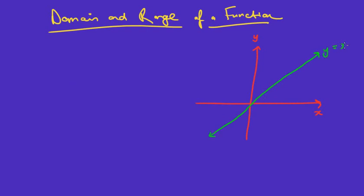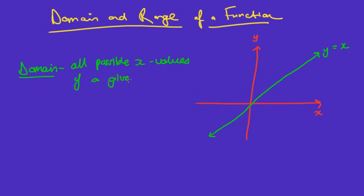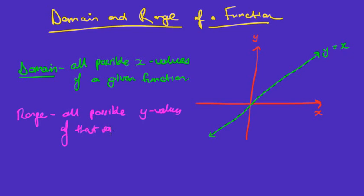I'm going to look at the graph of y equals x. So the domain first of all looks at all possible x values of a given graph or a given function. Remember, a function is a graph. Whereas the range looks at all the possible y values of that same function or that same graph.